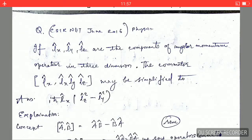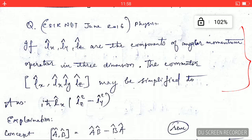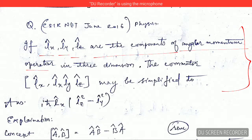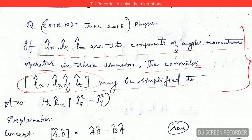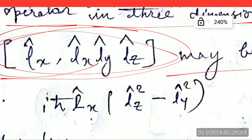Hello friends, welcome back to my channel. Today I am going to solve a very interesting problem from the chapters of quantum mechanics. This question was asked in CSIR NET June 2016 Physics. In this question, Lx, Ly, Lz are the components of the angular momentum operator in three dimensions, and they are asking us to simplify this commutator.